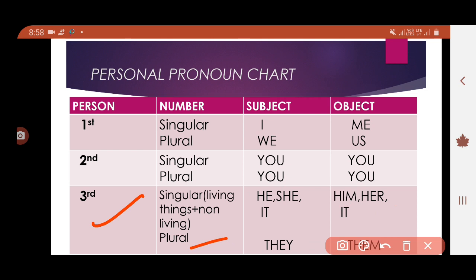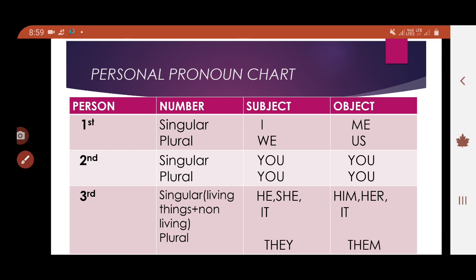For third person plural number, the subject is 'they' and the object is 'them'. So to summarize the third person: singular living — he/she → him/her; singular non-living — it → it; plural — they → them. I hope you are all clear with the personal pronouns chart. You must memorize this chart.